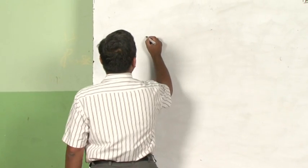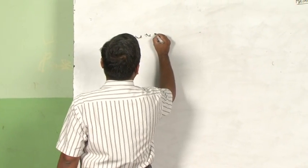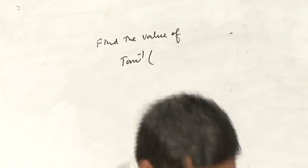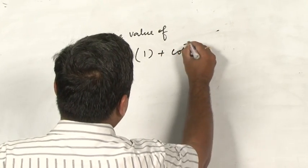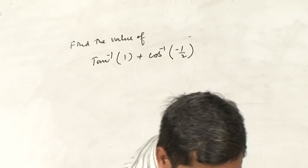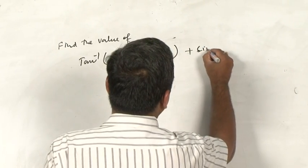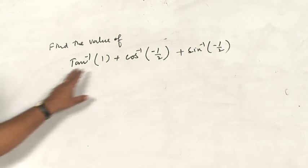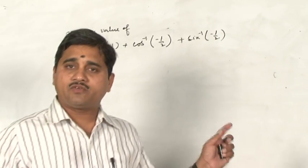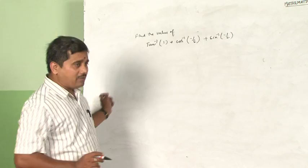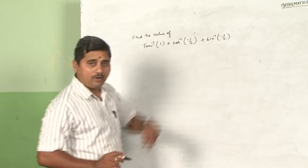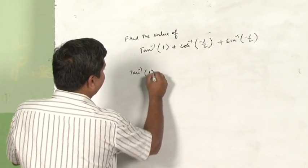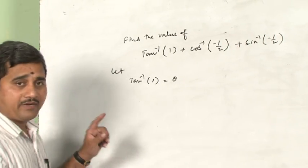The next problem is: find the value of tan⁻¹(1) + cos⁻¹(-1/2) + sin⁻¹(-1/2). We can solve this in two different methods. I will first explain the normal method using principal values, then use a formula to show what we will study in the future. Since inverse trigonometric functions are all angles, let tan⁻¹(1) = θ.